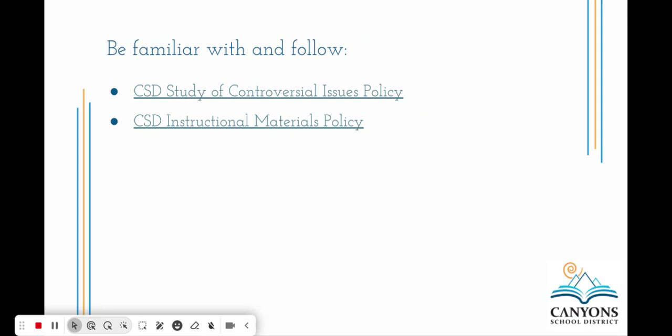We really want you to be familiar with and follow two Canyon School District policies. The first is the controversial issues policy, which you might not have looked at for a while. We don't want elections to be controversial, but some people might think that talking about them, especially in our current political climate, might lend itself to potential controversy. So please look over that policy. The main thing to highlight is: if you are planning on teaching or talking about elections, make sure you have let your principal know and they know your plan. The second is our instructional materials policy — whatever resources you use to support teaching about the election process, make sure they satisfy our 13 criteria.